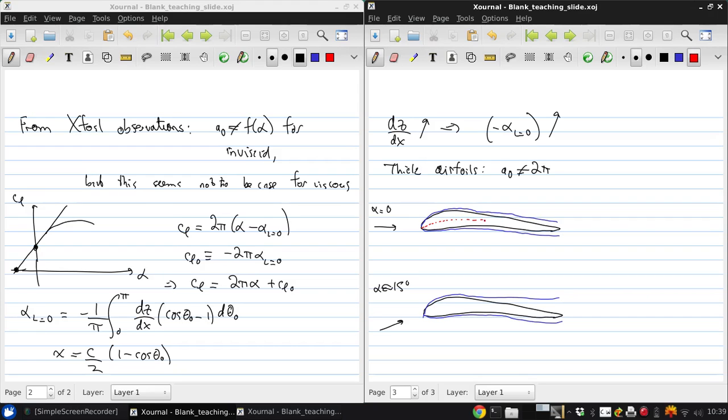Now, the camber line is defined as the line which lies halfway between the upper and lower surface. And we can see that that's effectively the same thing for either the airfoil or the airfoil plus displacement body for this case. Because the δ* or the displacement thickness is roughly the same on both sides of the airfoil, the airfoil camber line and the airfoil plus displacement body camber line are essentially the same.